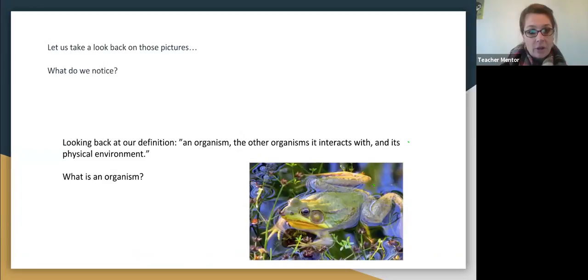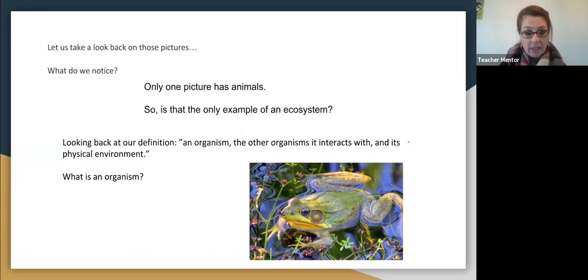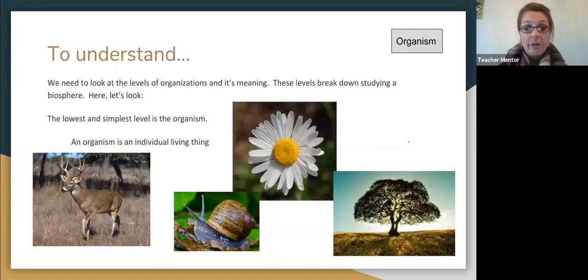Does an ecosystem have to have animals? No. Okay, good. That was my point. Exactly. So even though we can't see animals in the mountain picture or the small pond, doesn't mean it's not an ecosystem. There are still organisms living there. Awesome. And I like the fact that you brought in the weather. Okay, so we noticed that one picture only had animals. What is an organism? We need to figure that out first.